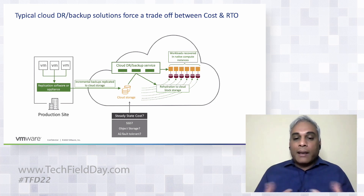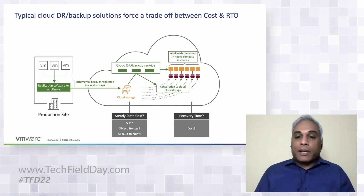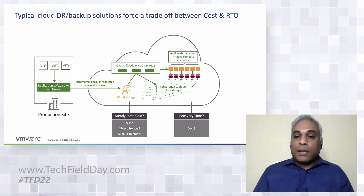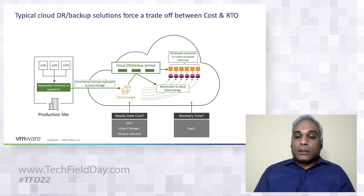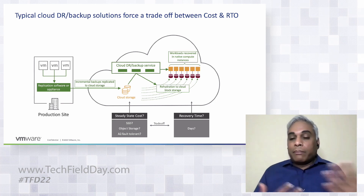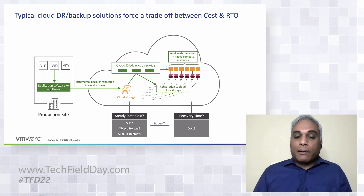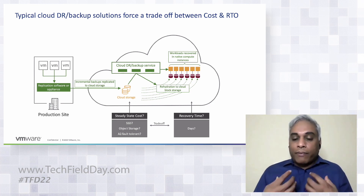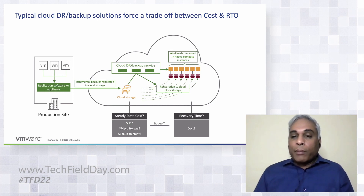The common alternative is object storage — it's way cheaper. But the challenge is recovery time. You have to copy all the data into high-performance block storage like EBS, which can take hours or days depending on data volume. For one customer, analysis showed it would take 100 days to complete rehydration. You can't start workloads until fully rehydrated into EBS blocks.